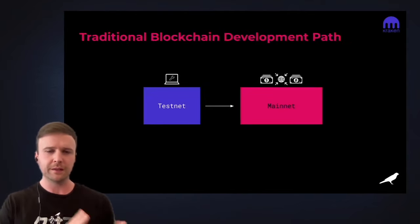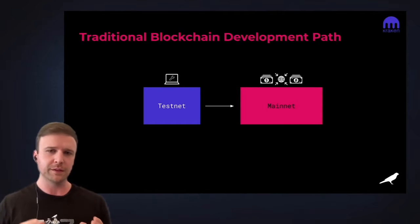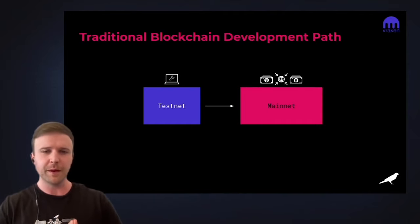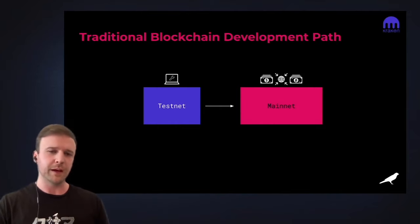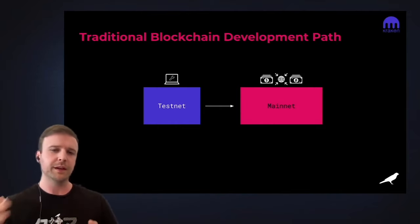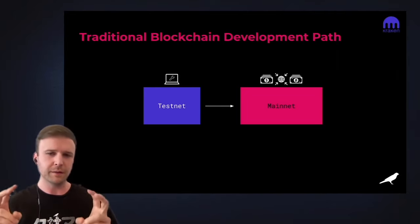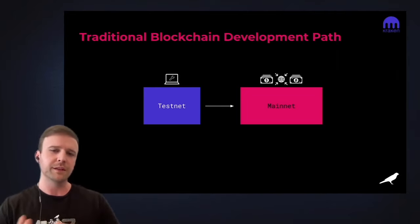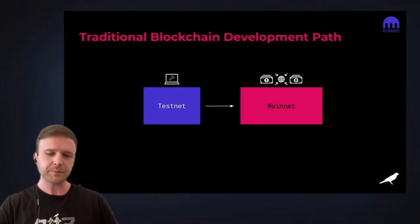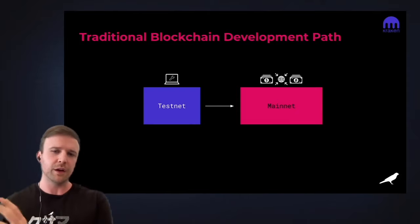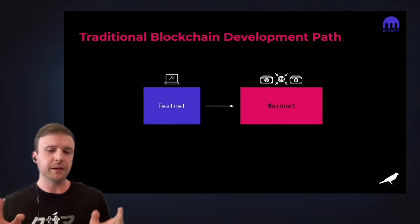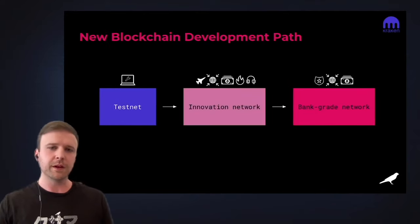Let's start by taking a step back to the traditional blockchain development path that we've seen in the past. Traditionally, teams will test on a testnet — in the Ethereum world, like a Kovan testnet. There's obviously no real value in that environment, so to actually predict and experience what you will see in the real world when you launch on mainnet is nearly impossible on testnet. But historically, teams would build, test on testnet, and then launch on mainnet and kind of hope and pray that things didn't break and value wasn't lost.